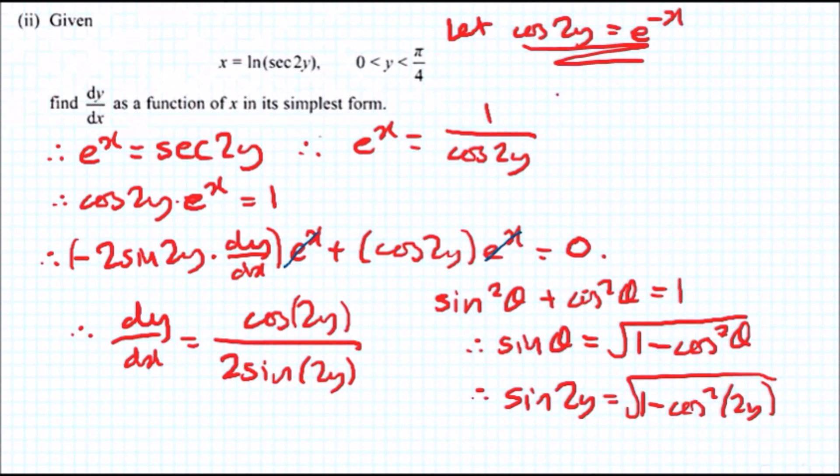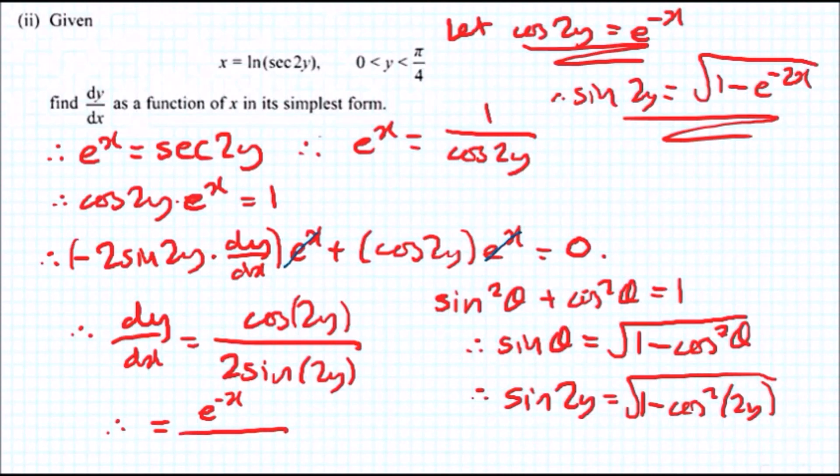So we can write the top here. So therefore, sine 2y equals the square root of 1 minus e^(-2x). And that's it. Plug both of these into the final equation and you're going to get, therefore, dy/dx equals e^(-x) all over 2 times the square root of 1 minus e^(-2x).